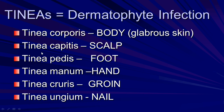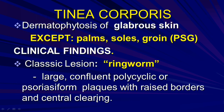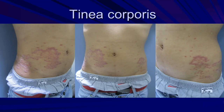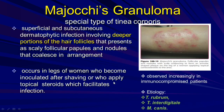Tinea corporis affects only the body. The classical finding is ringworm. This is the picture of tinea corporis patients. Majocchi's granuloma is a deeper tinea corporis infection with polychrome papules, nodules, and annular-shaped lesions. It can involve the hair follicle with papules and nodules in a coalescing arrangement.